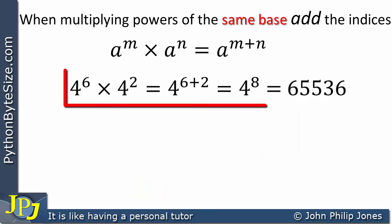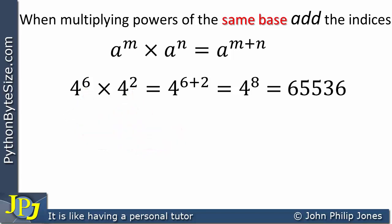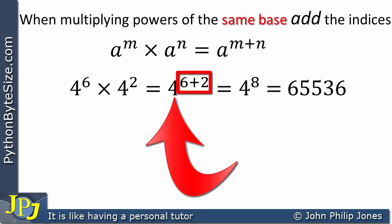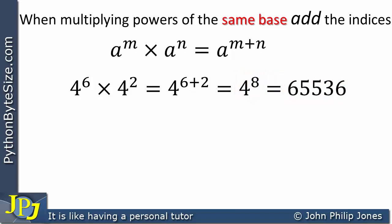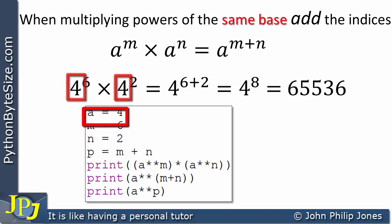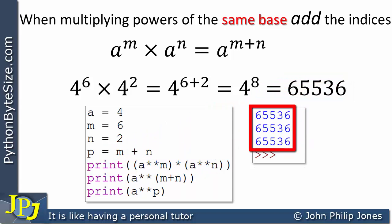Let's consider another example: a base of 4 raised to the power of 6 and to the power of 2, respectively. We write the base down again and add 6 to 2 to give 4 to the power of 8, because 6 plus 2 is 8, and running that through a calculator gives us the resulting number. The Python program is almost identical to before; the only difference is that a equals 4, m equals 6, and n equals 2. The output in all three cases matches the expected value, confirming the result.